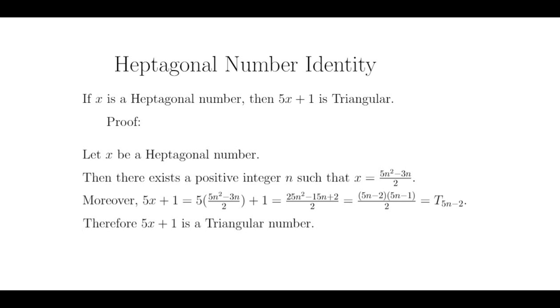Since x is heptagonal, there exists a positive integer n such that x equals 5n times n minus 3 all divided by 2. After multiplying this expression by 5 and adding 1, this simplifies to 5n minus 2 times 5n minus 1 all divided by 2.